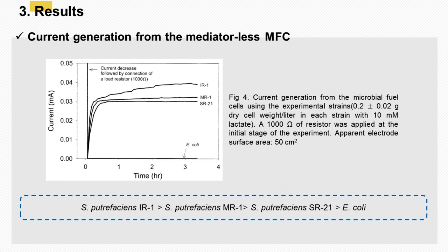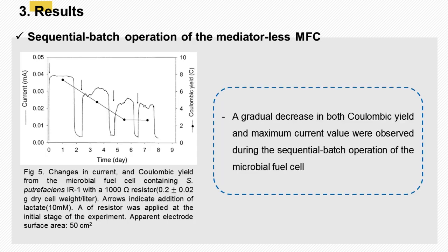The MFC using E. coli in the absence of a mediator produced a negligible amount of current. Further experiments were carried out using strain IR-1 as a model strain that generated the highest potential and current in the mediator-less microbial fuel cell. A microbial fuel cell was set up using S. putrefaciens IR-1 with lactate as the fuel. Lactate concentration was less than 0.01 millimole per liter in the anode compartment when the current had reached the background value. Lactate was consumed in the anode compartment coupled to current generation, and repeated lactate additions were coupled to current generation. However, a gradual decrease in both coulombic yield and maximum current value were observed during the sequential batch operation of the microbial fuel cell.